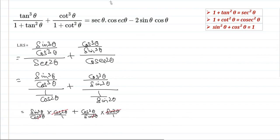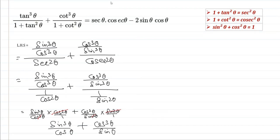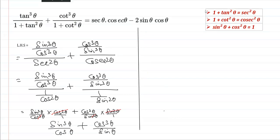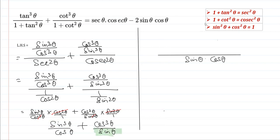After reducing, we get sin³θ/cosθ plus cos³θ/sinθ. Taking the LCM of sinθ·cosθ, the numerator becomes sin⁴θ + cos⁴θ — since sinθ multiplies sin³θ to give sin⁴θ, and cosθ multiplies cos³θ to give cos⁴θ — all over sinθ·cosθ.